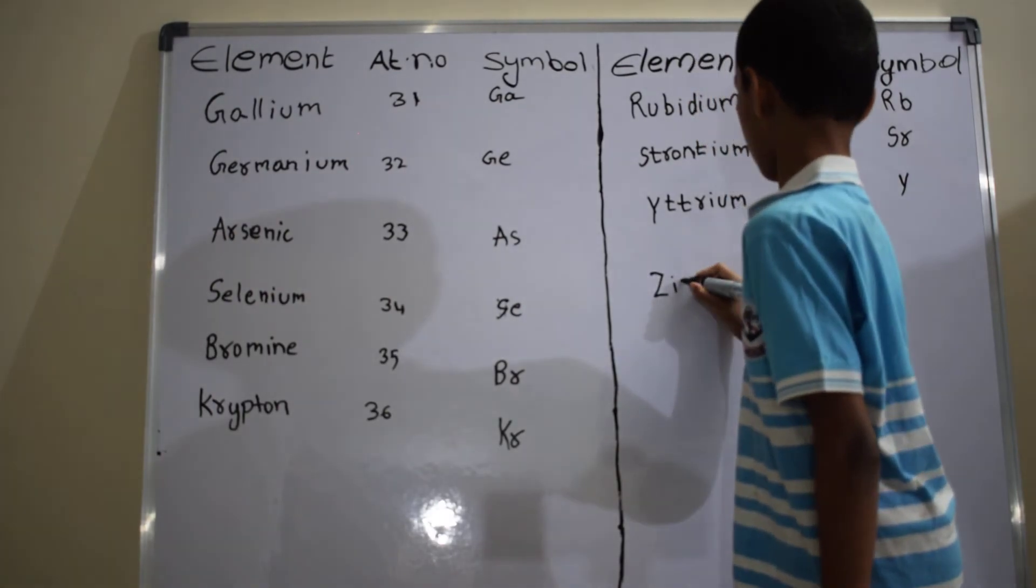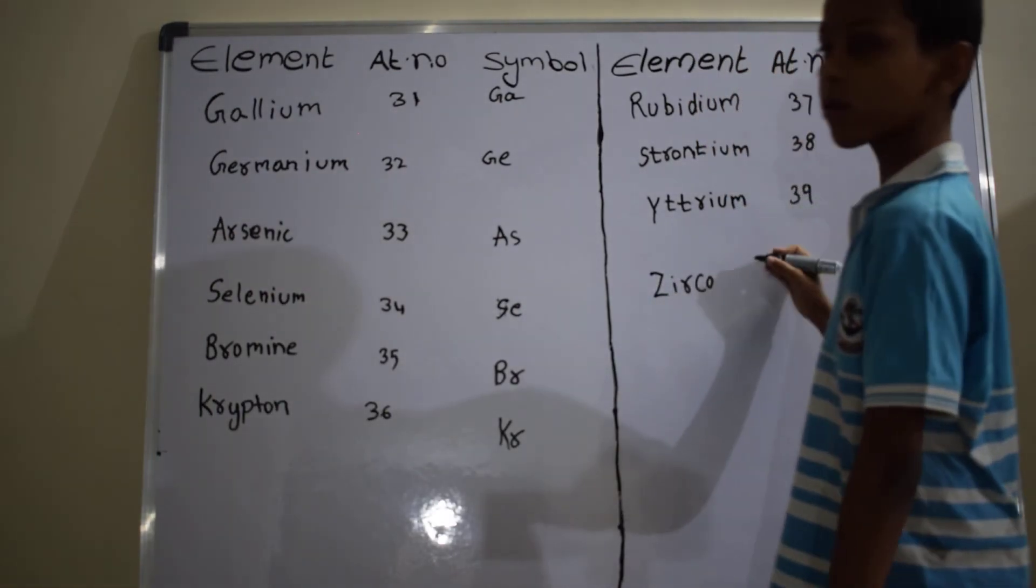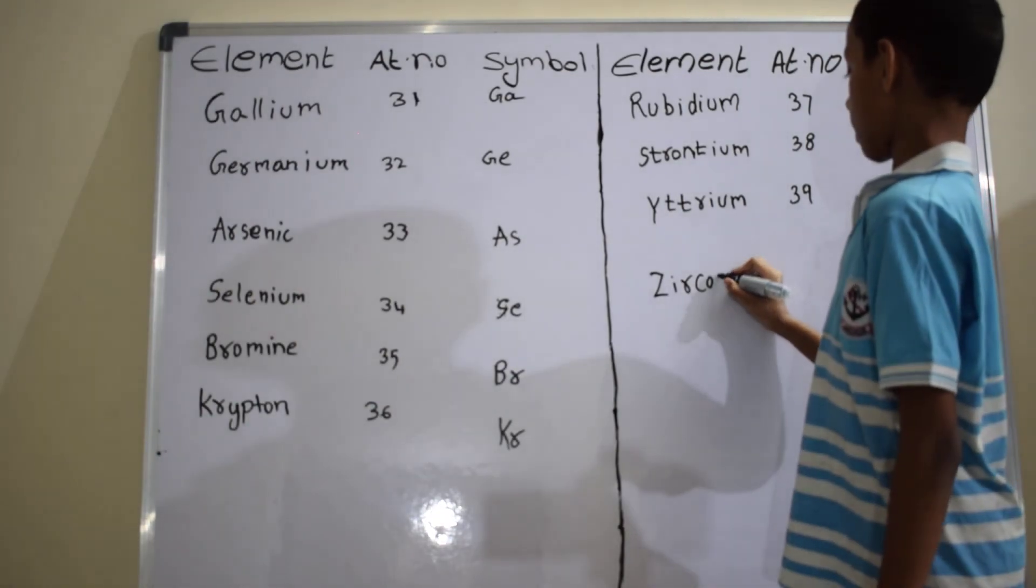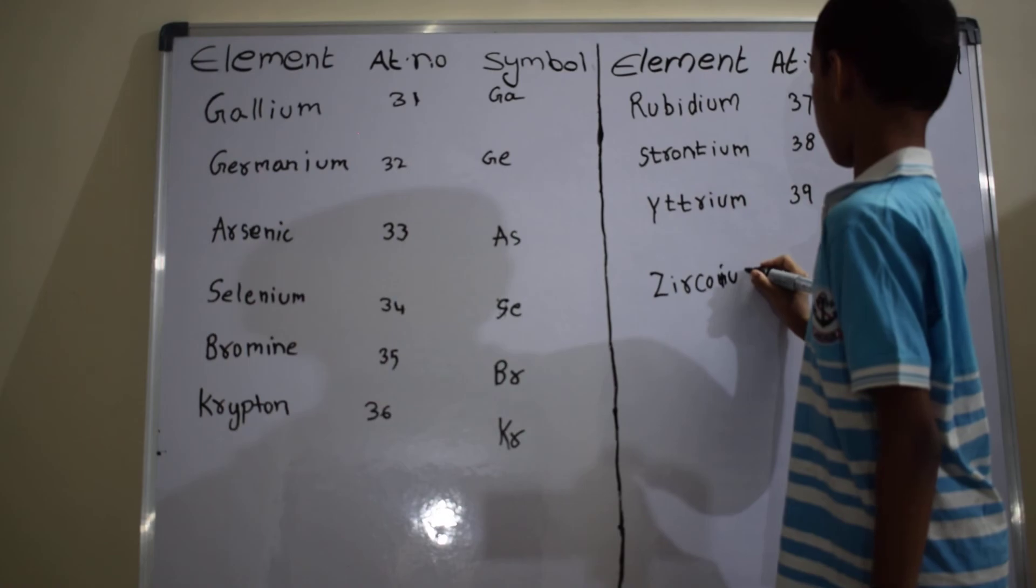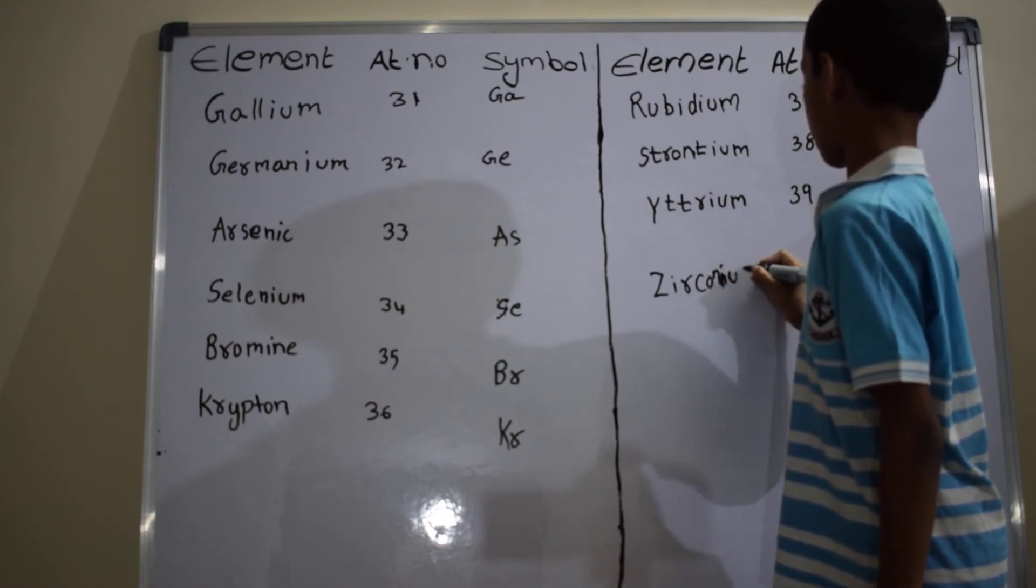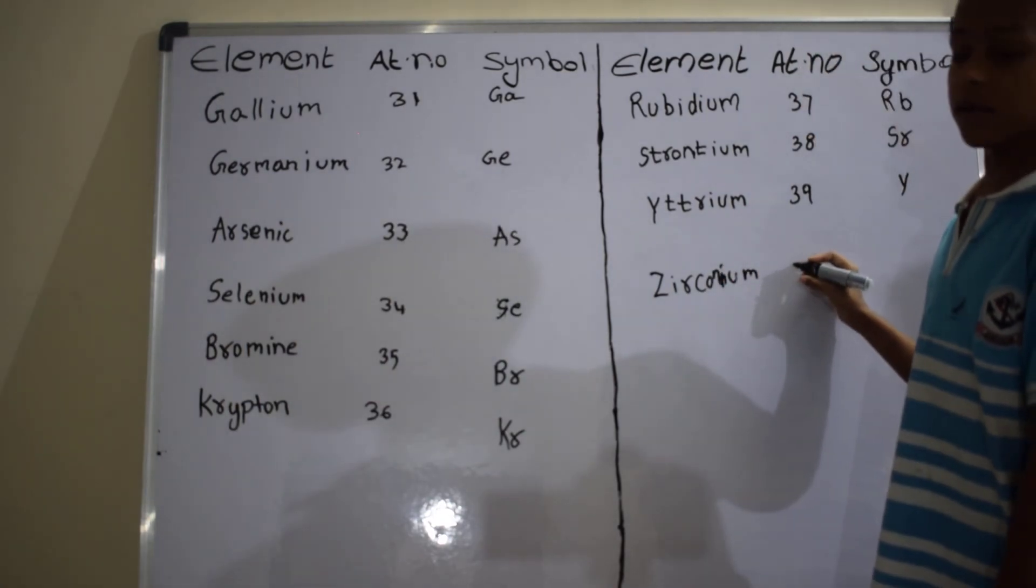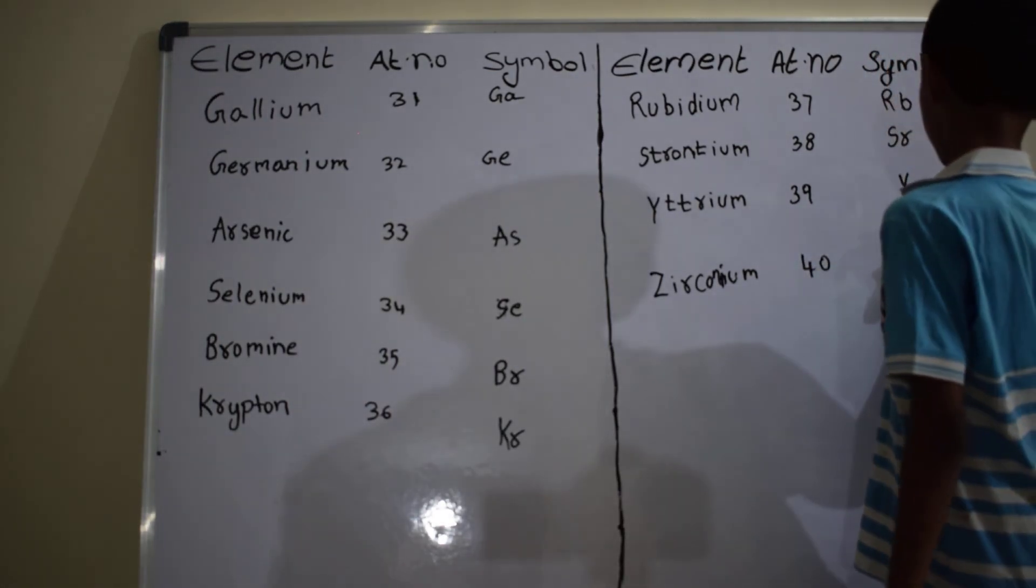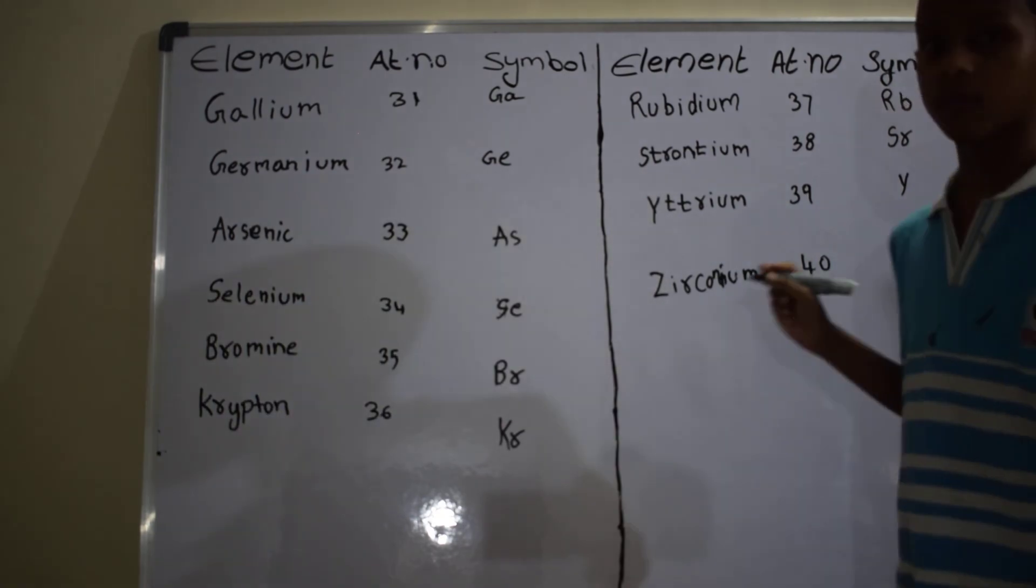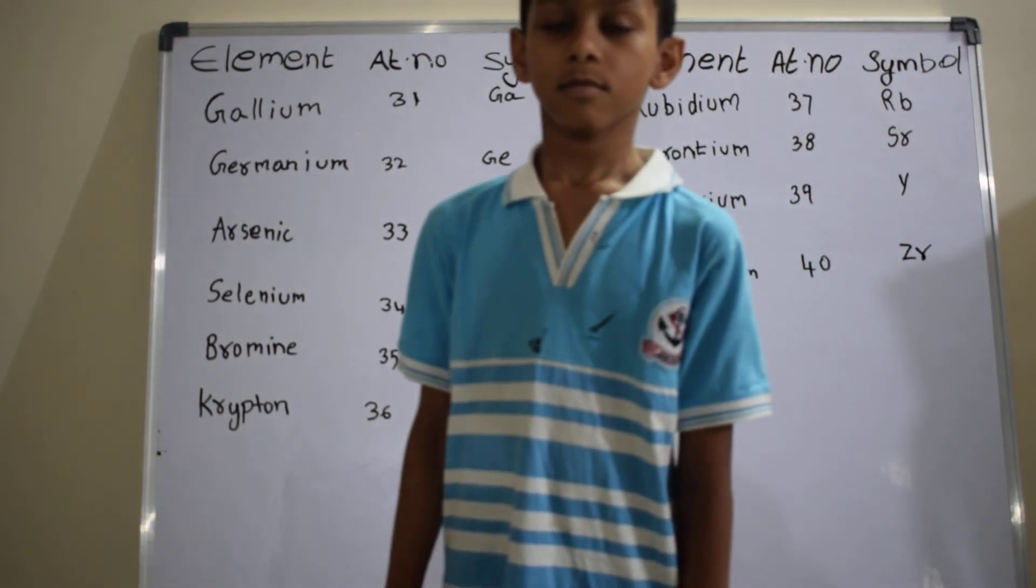Next element is zirconium, Z-I-R-C-O-N-I-U-M. Atomic number is 40. Symbol is Zr. That's all.